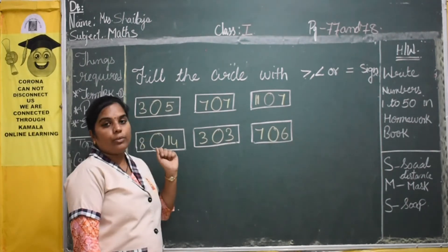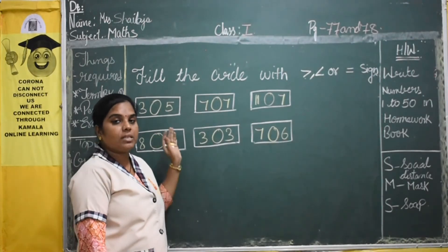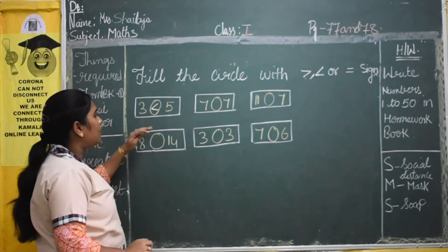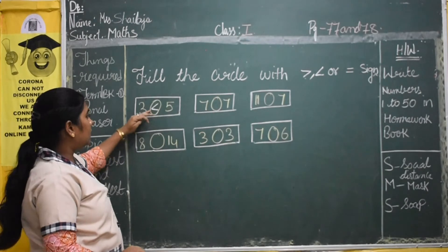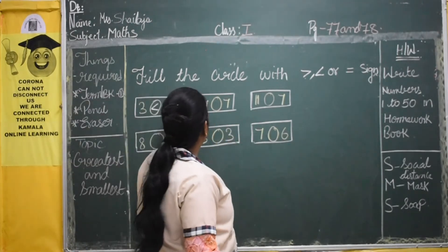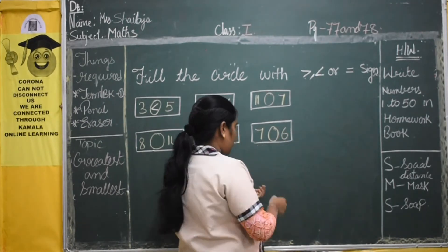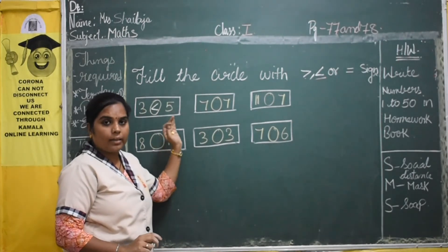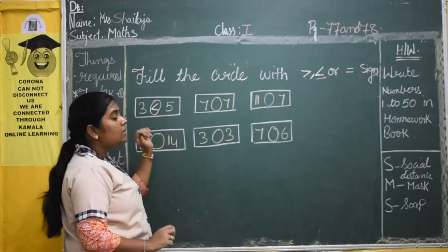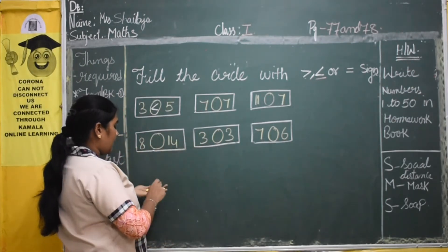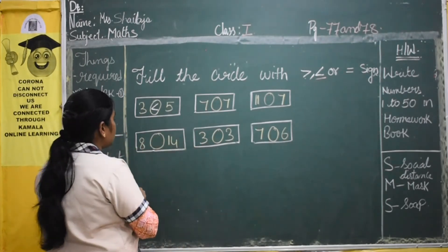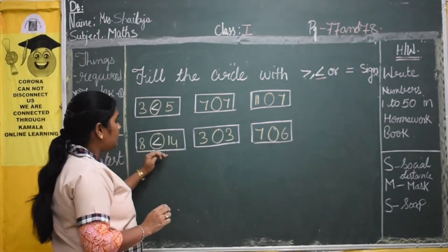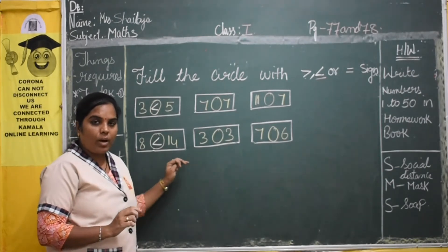Here we have 3 and 5. So we should see which is the greatest number. So here we are using this sign — 3 is smaller than 5. Now here, which is the biggest number? It is 14. So here we are using the less than symbol — 8 is smaller than 14.